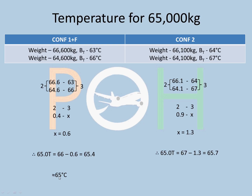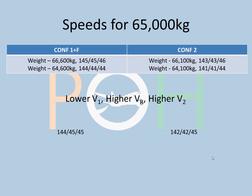The temperature for 65,000 kg in both configurations is 65°C. Next, find V-speeds for 65,000 kg — since the charted speeds were for 66.6 and 64.6 tons. The rule is: lower V1, higher VR, higher V2. Since the speeds were not exactly for 65 tons, apply interpolation similarly.